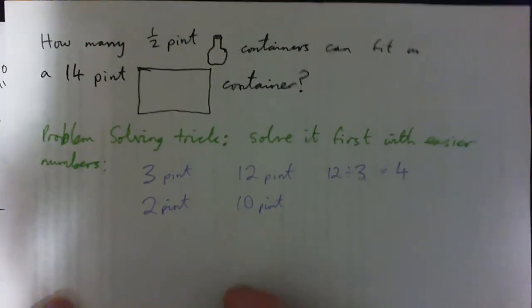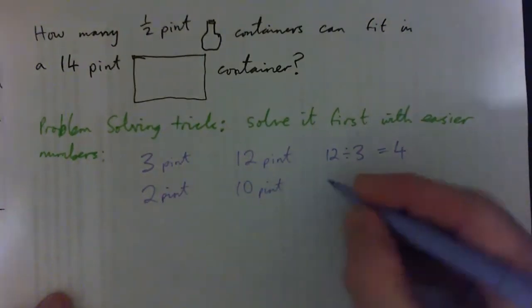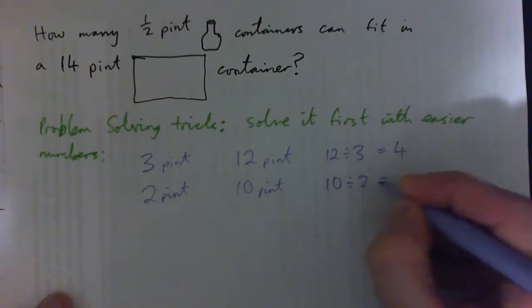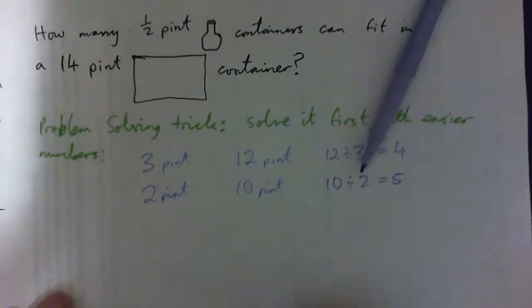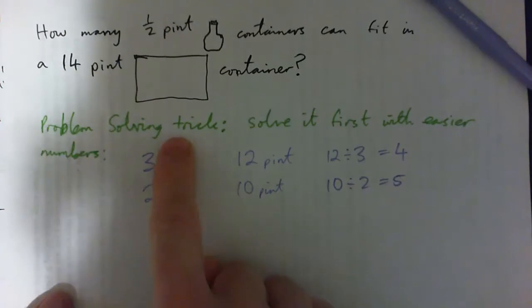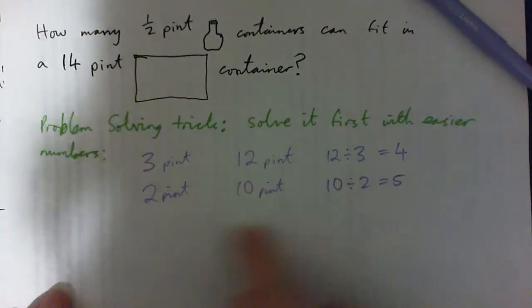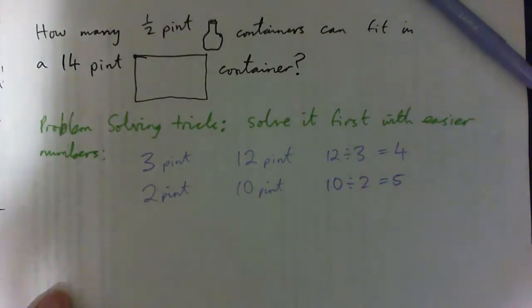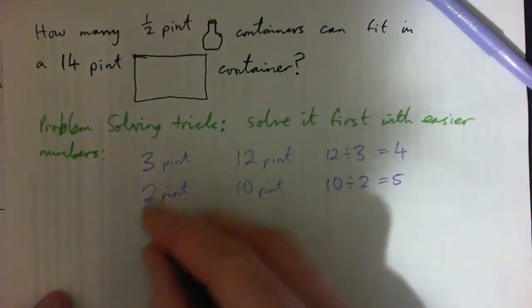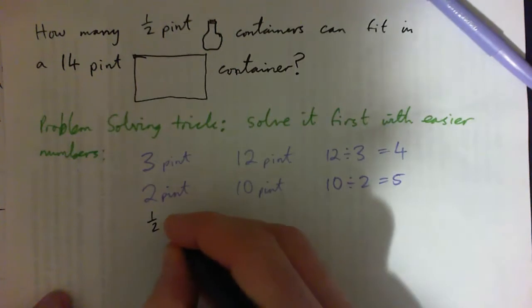10 divided by 2 equals 5. That's what we do. Once I use this trick and put in easier numbers, it helped us understand the problem. Now we know what to do—you just take 14.